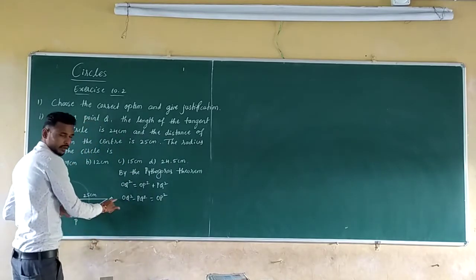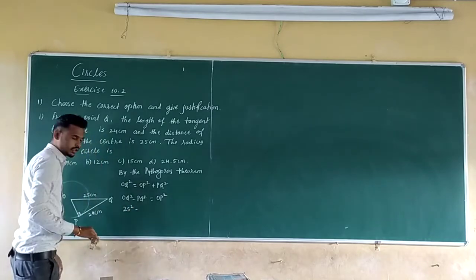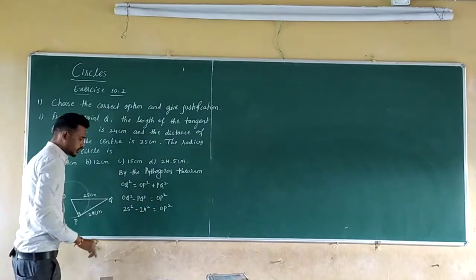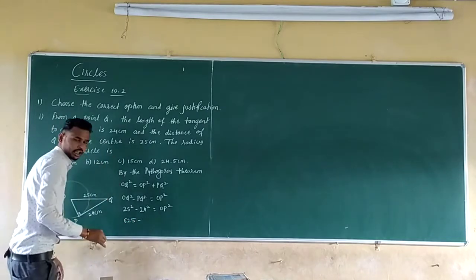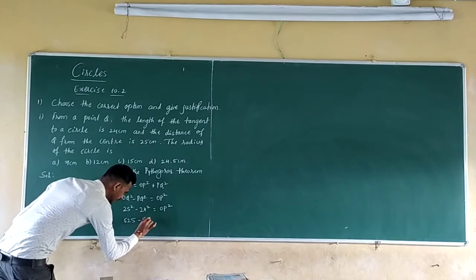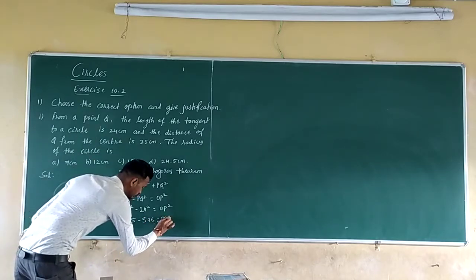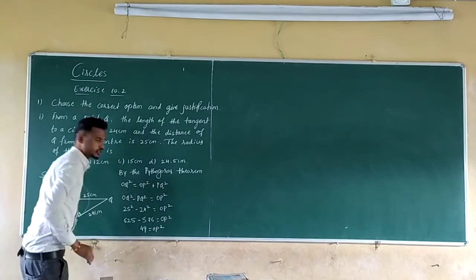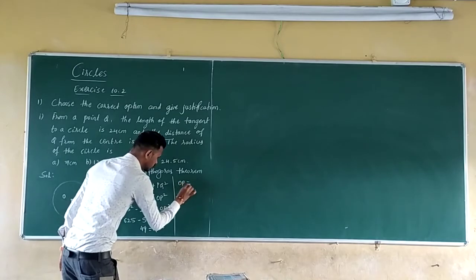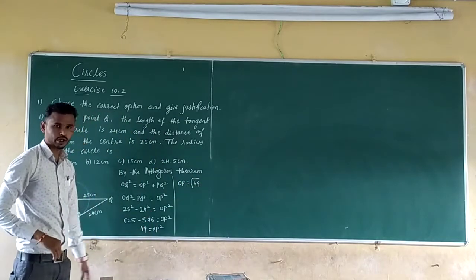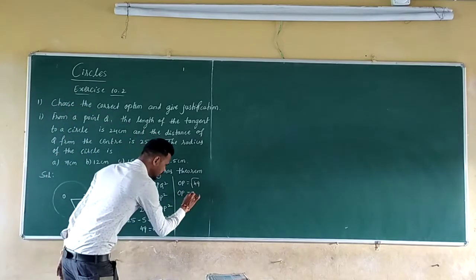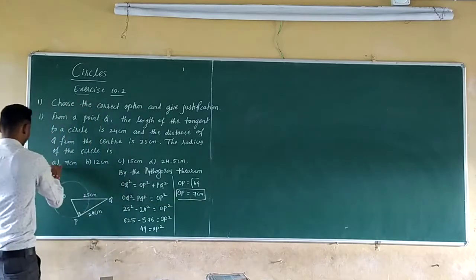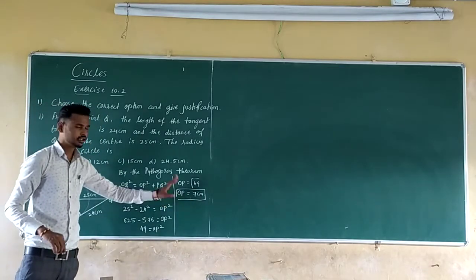We need radius OP, so rearranging: OQ² − PQ² = OP². Now substituting: 25² − 24² = OP². So 625 − 576 = 49 = OP². Therefore OP = √49 = 7. The radius is 7 cm. So option A is correct, that is 7 cm. This is the solution of the first question.